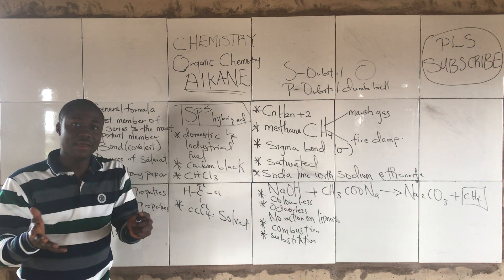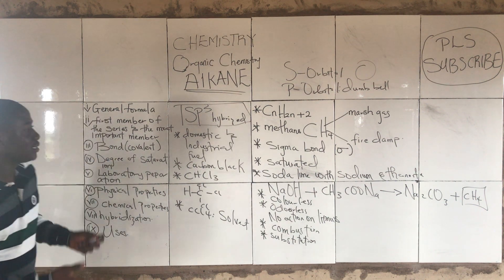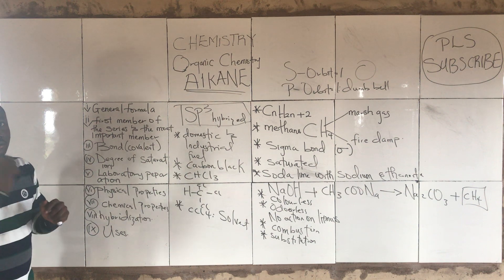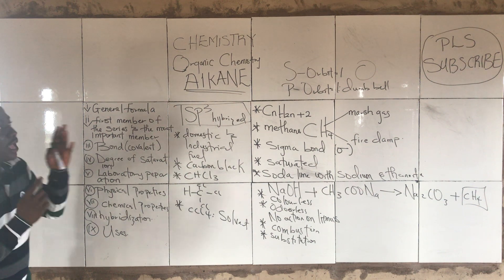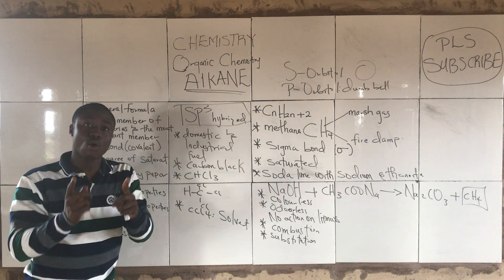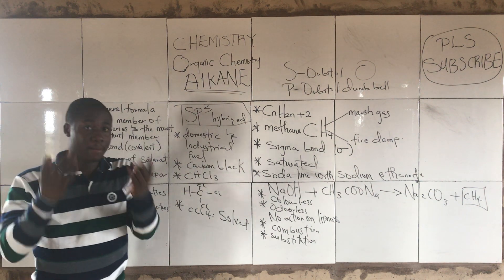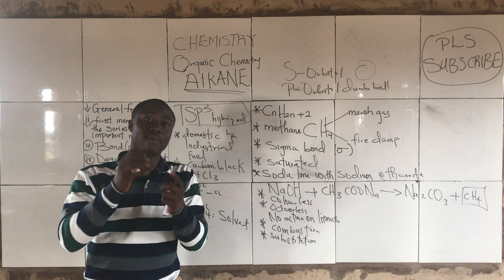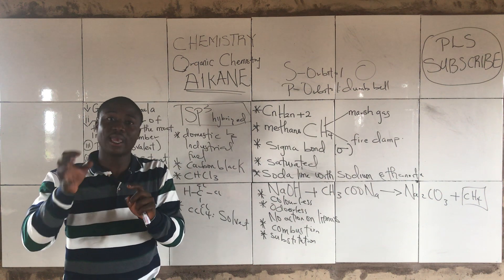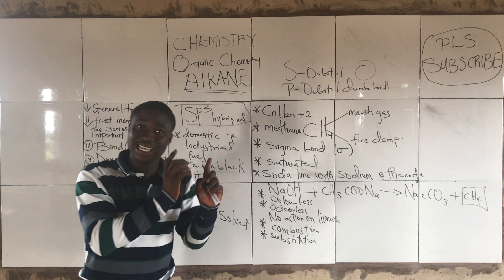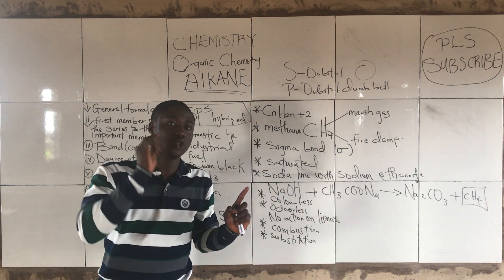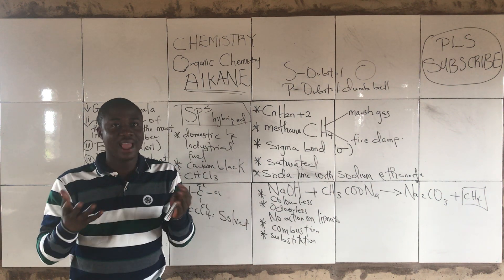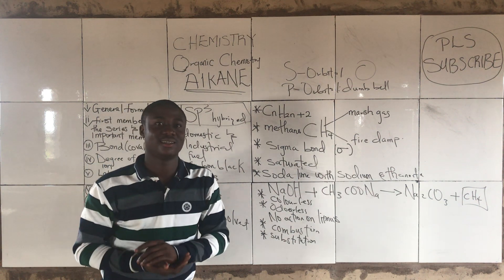I believe we now understand the concept about alkanes. Remember, alkanes are also called paraffins, and the type of bond seen in alkanes is the sigma bond, not the pi bond. Thanks for watching.